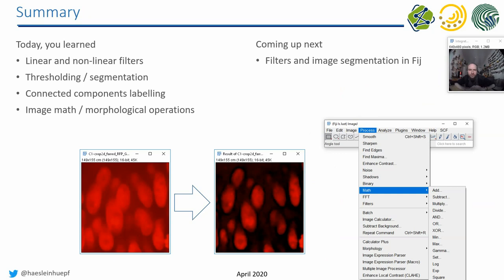So that's the part for now. We have gone through quite some operations. I showed you what filters are and the difference between linear and nonlinear filters, image thresholding and segmentation, what the difference between segmentation and labeling is, connected components labeling, and what kind of additional image math operations you can do on images. In the next part, I will show you how to do these things in Fiji. See you soon.